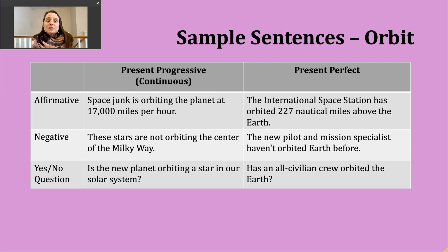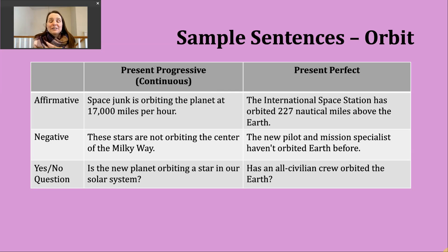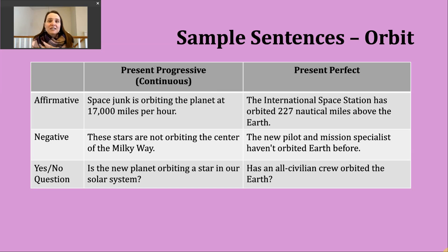For a yes or no question in the present progressive, start with a present form of be — whichever matches your subject — then the subject, then the -ing form of the verb. Example: is the new planet orbiting a star in our solar system? There have been news articles recently about scientists potentially discovering a new planet, and there are many questions being asked about that.